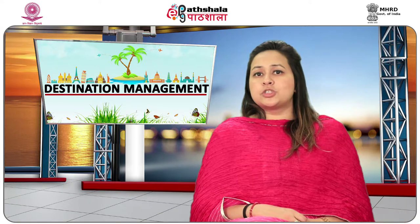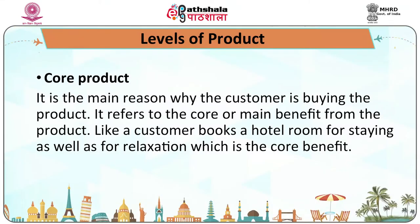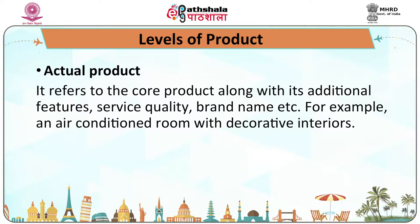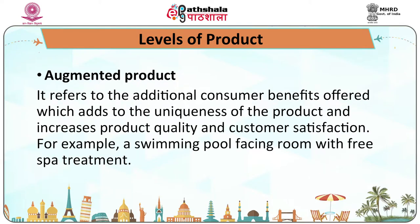According to Philip Kotler, there are three levels of product. The core product is the main reason why the customer is buying the product — it refers to the core or main benefit. For example, a customer books a hotel room for staying as well as for relaxation. Actual product refers to the core product along with additional features such as service quality, brand name, etc. — for example, an air-conditioned room with decorative interiors. Augmented product refers to additional consumer benefits which add to the uniqueness of the product and increase customer satisfaction — for example, a swimming pool-facing room with free spa treatment.